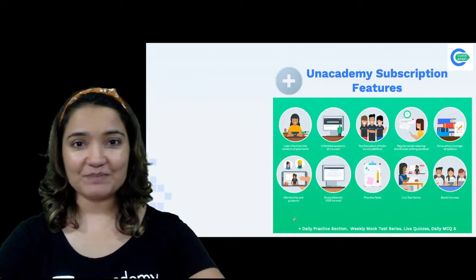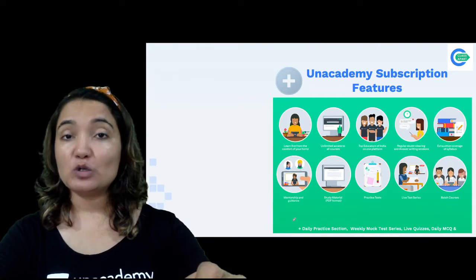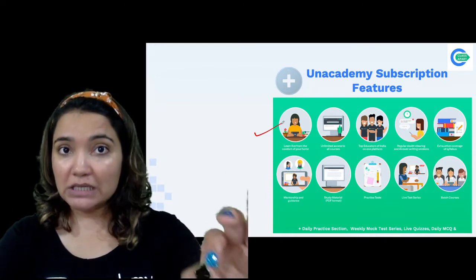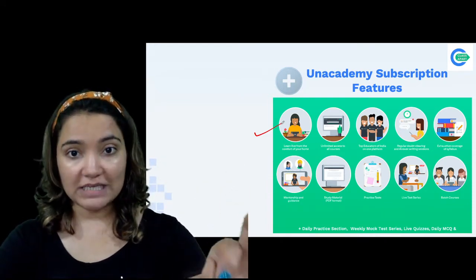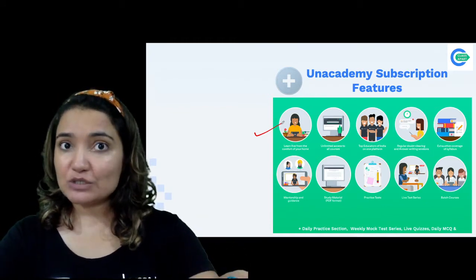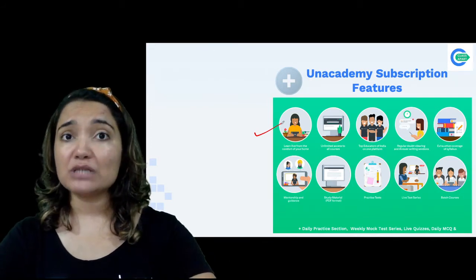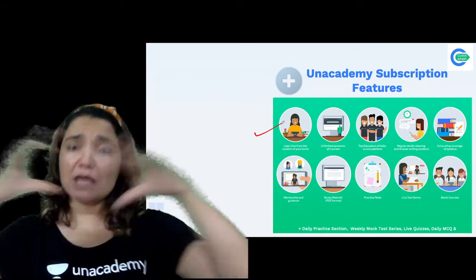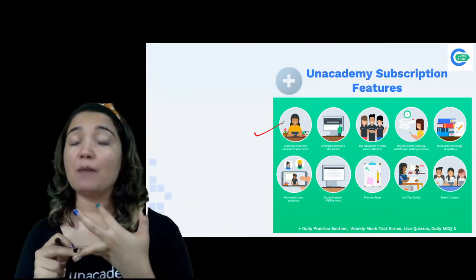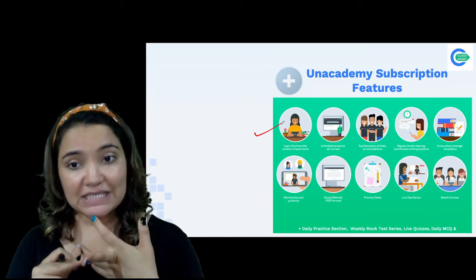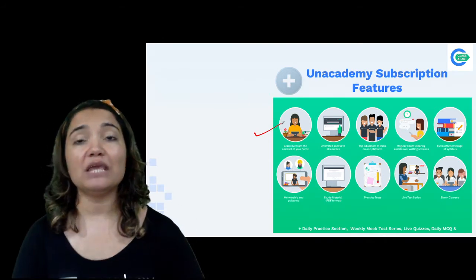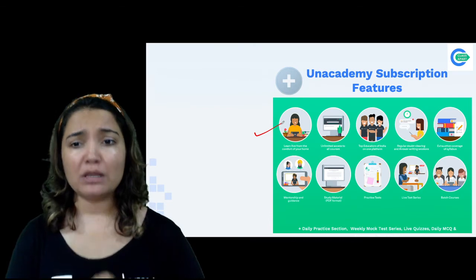Before I end the video, let me tell you about the Unacademy Plus subscription features: you learn sitting at your home with unlimited access, all sources available, top educators, regular doubt-clearing sessions, whole syllabus coverage, mentorship and guidance program, PDF study material, practice tests, live test series, and batch courses. These are all features of the Unacademy Plus subscription. Use my code SOS10 for a flat 10% discount. Pricing: 3 months — 7,500; 6 months — 10,000; 12 months — 15,000; 15 months — 18,000.